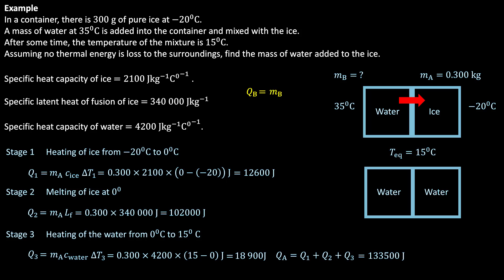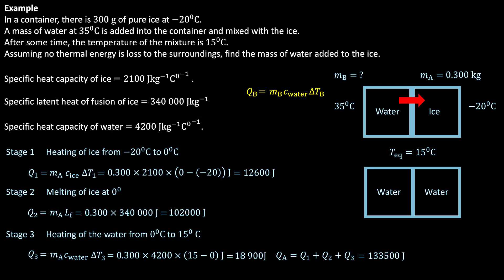Let the heat loss from the added water be QB. QB equals MB times C_water times delta TB, where C_water is 4200 joules per kg per degree Celsius and delta TB is 15 minus 35, which gives minus 20 degrees Celsius. The minus means the temperature has decreased. Substituting into the equation gives QB equals minus 84,000 times MB. The negative indicates the water loses thermal energy.